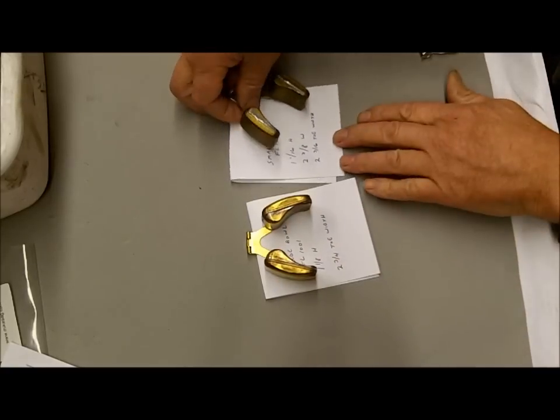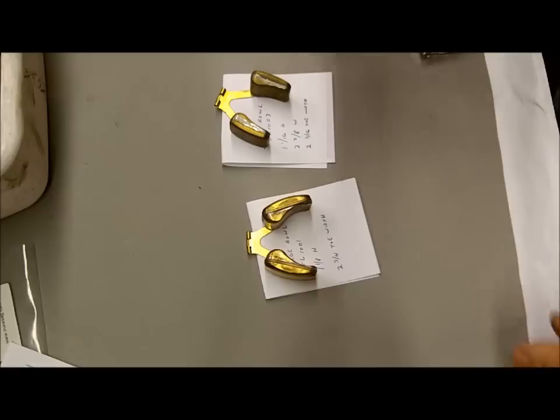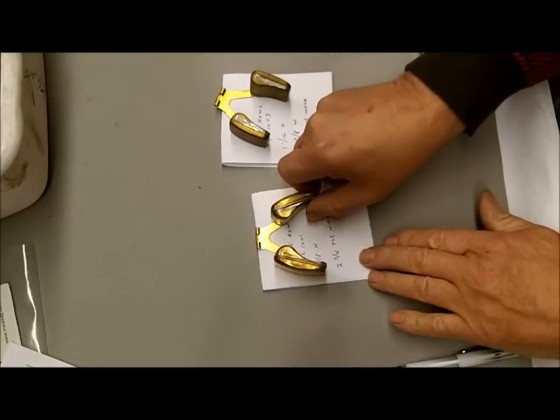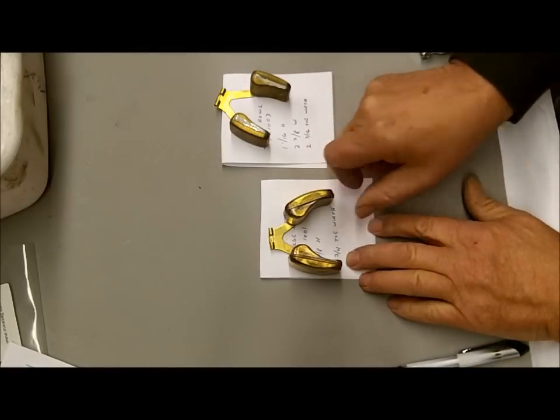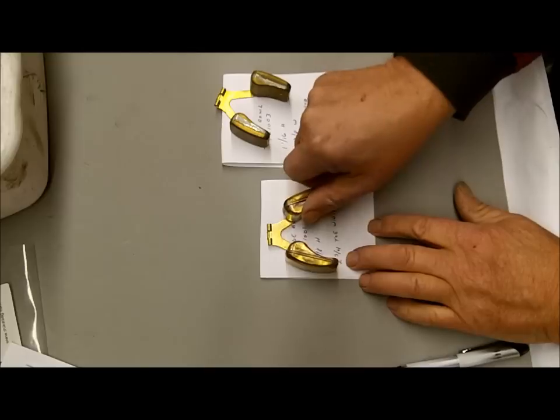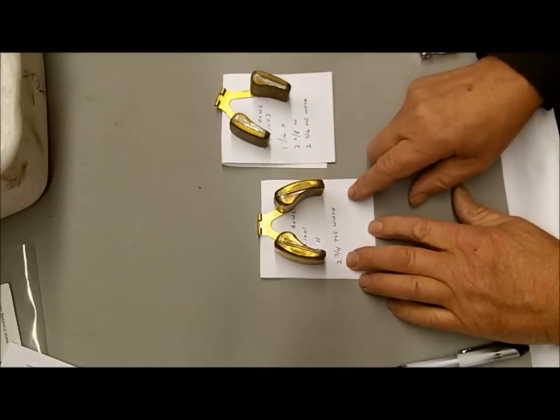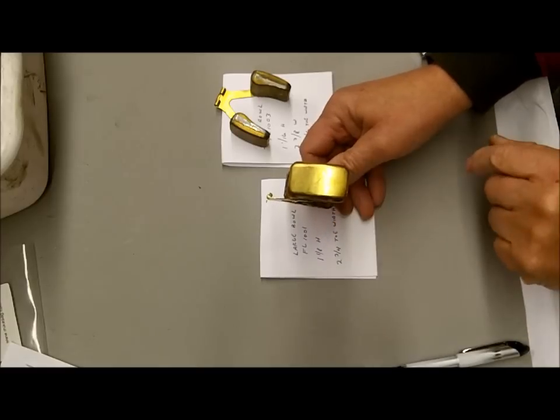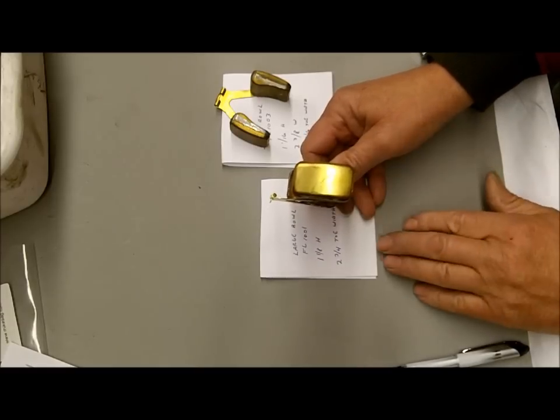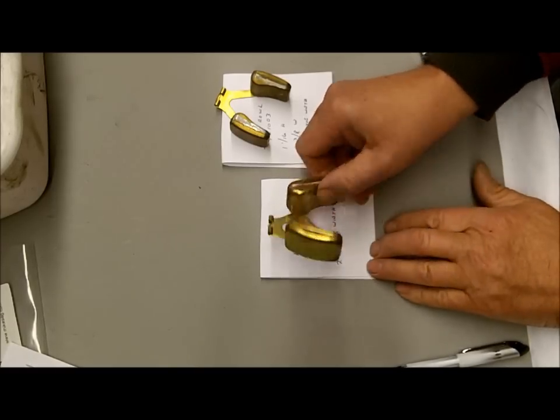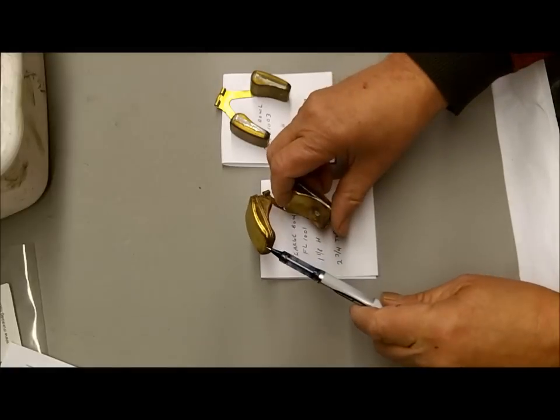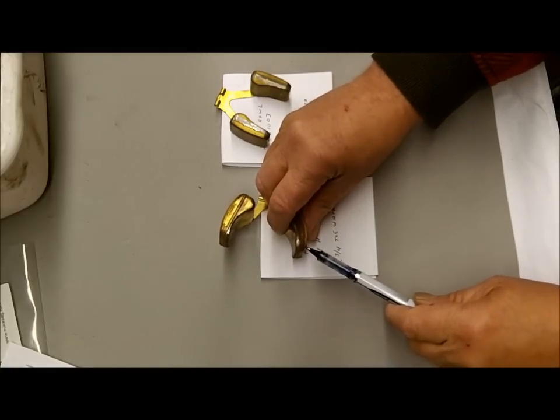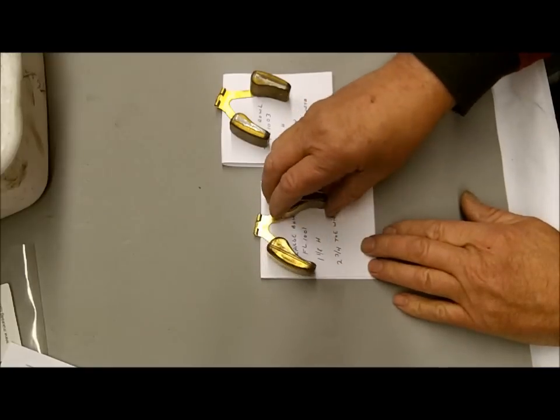Now, the difference between the two is quite a lot. This is our FL-1001, the large bull Marvel Scheibler float. The height here is 1 and 1/8 inches overall, and the toe, from here to here, is 2 and 3/4 inches.